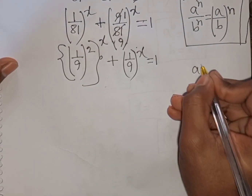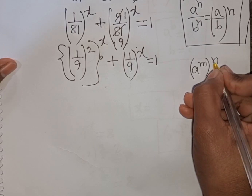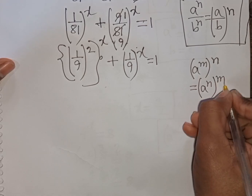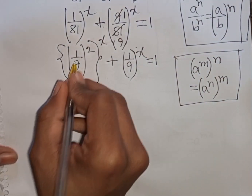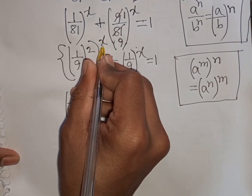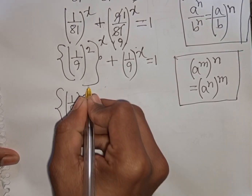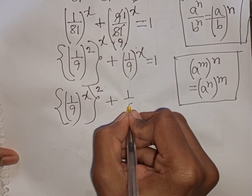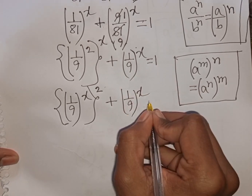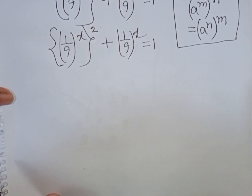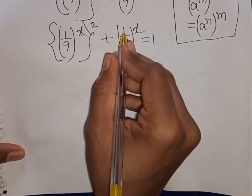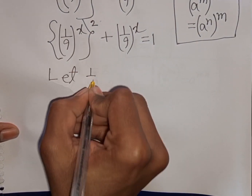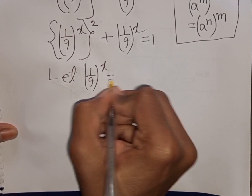Here you can apply the exponential rule that a power m bracket power n equals a power n bracket power m. According to this rule, I can write (1/9) bracket power x, then the second bracket. We see (1/9) bracket power x and (1/9) bracket power x — both terms are the same. So let (1/9) bracket power x be substituted by y.